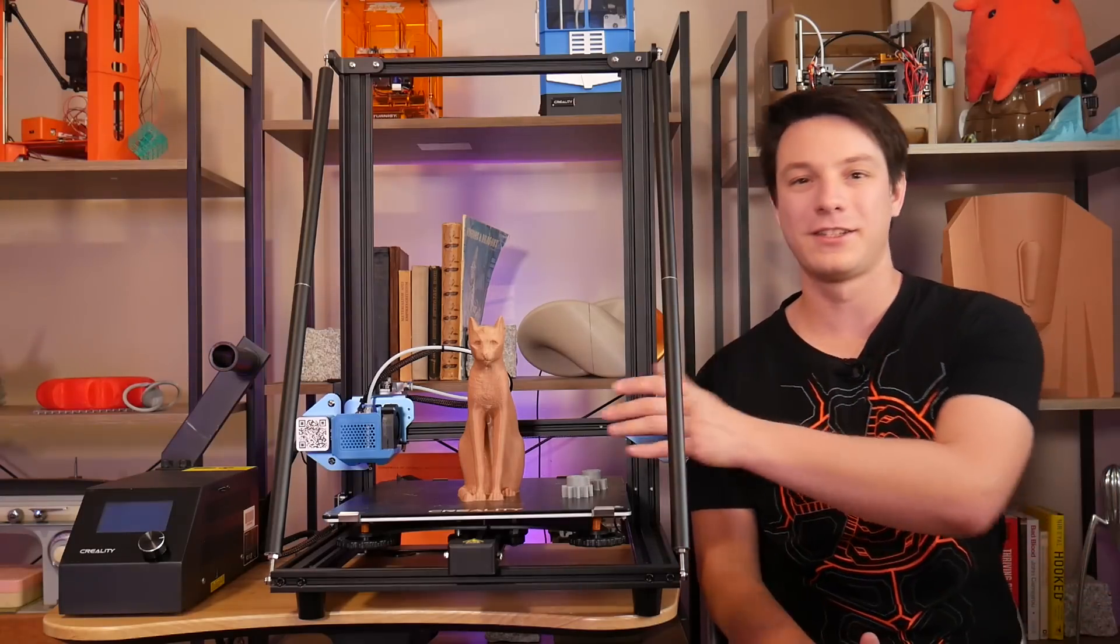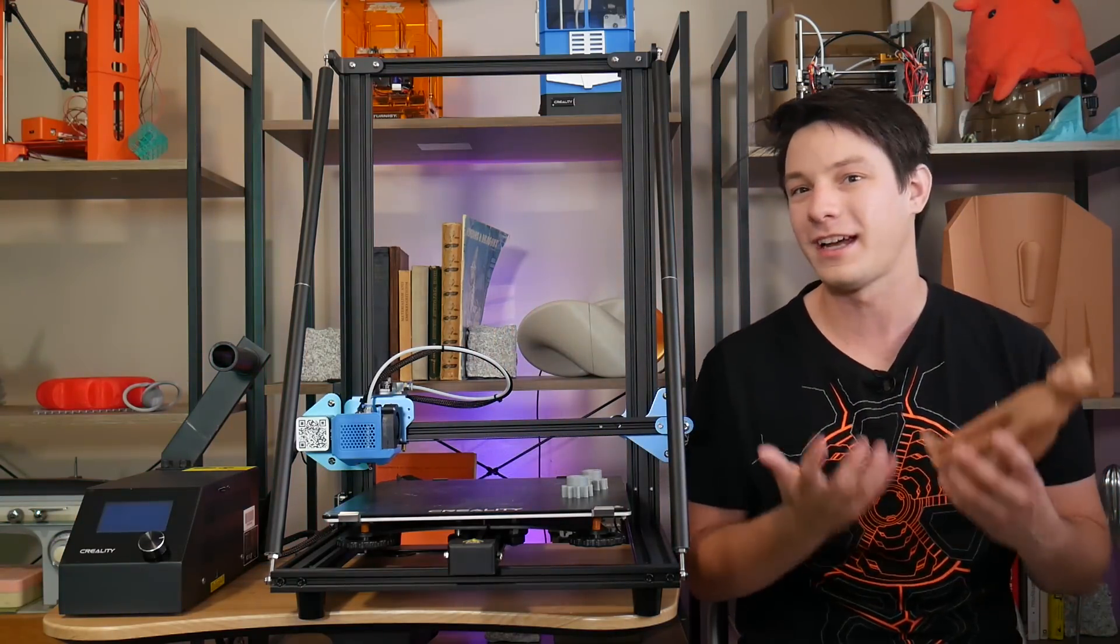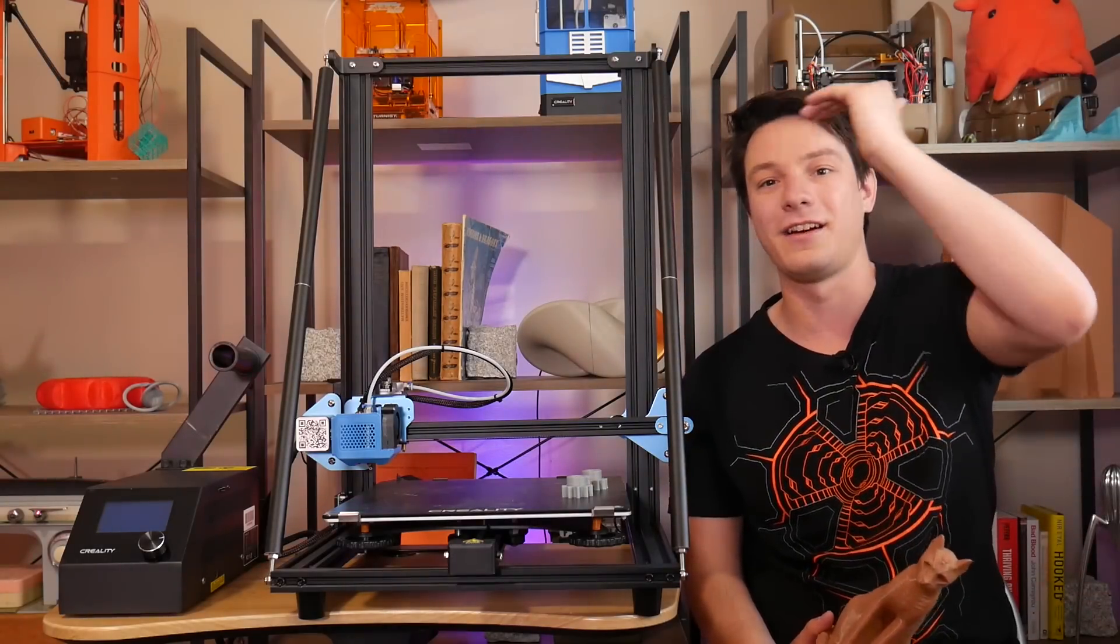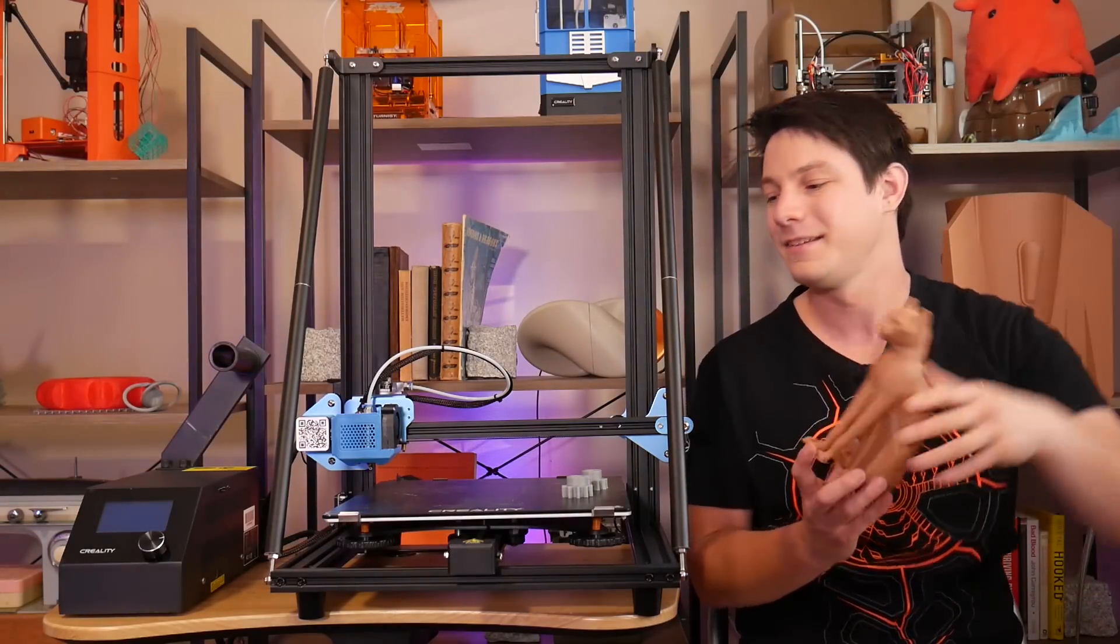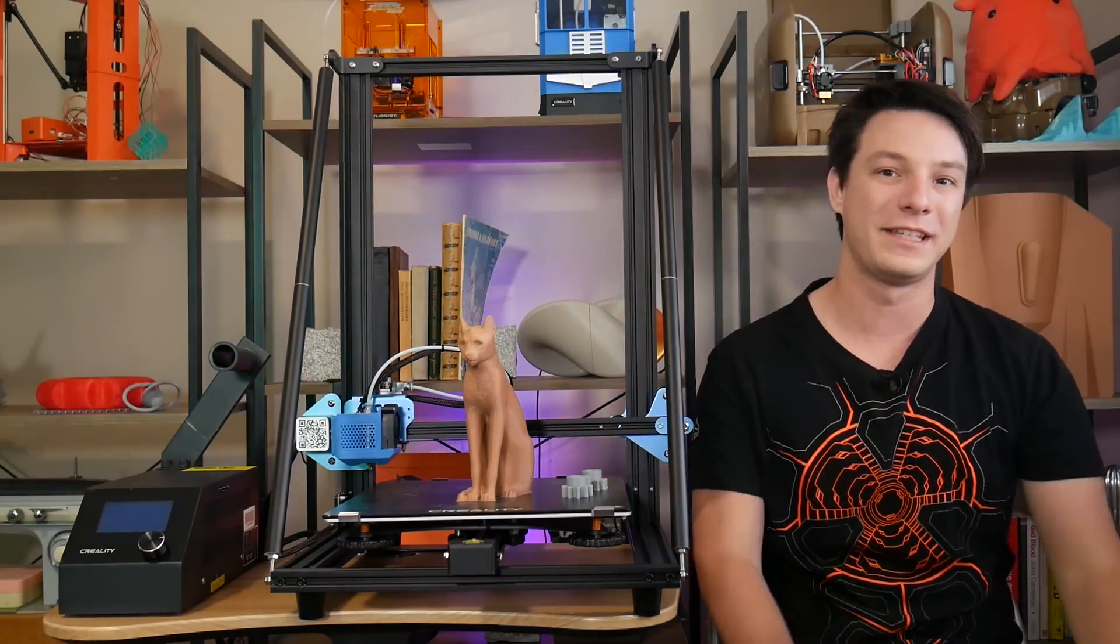Alrighty, so this machine can do smaller prints totally fine, but I simply don't have the time or patience to run a multi-day 3D print to test that 400 millimeter of Z height. I'm not going to just make a giant cat because it's going to take forever and then just waste heaps of material.